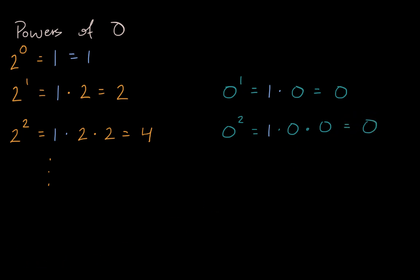What do you think zero to some arbitrary positive integer is going to be? Well, it's going to be equal to one times zero that positive integer number of times. So once again, it's going to be equal to zero.